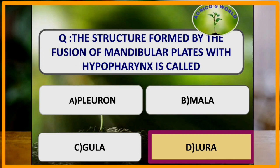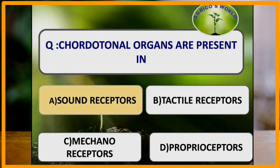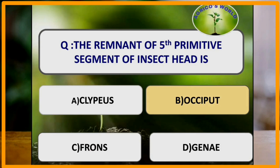Glossae and paraglossae are together called ligula. Ligula is a lobe at the tip of the labium. Chordotonal organs are present in sound receptors. The receptors which detect the movement of objects in the environment are called tactile receptors. The remnants of the fifth primitive segment of the insect head is the occiput.